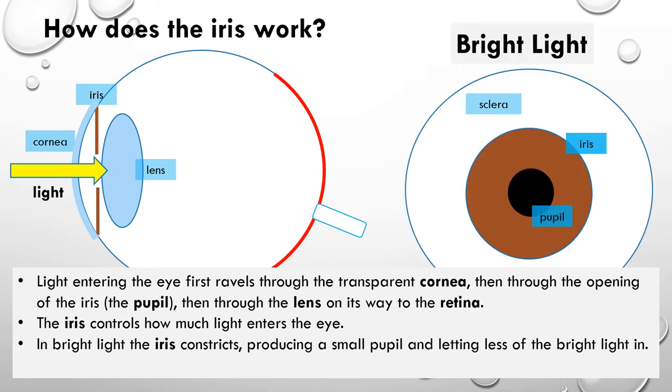So here is a look at the eye from the front. We can see the iris, the pupil, and the sclera. The sclera, the white part of the eye. The iris is the colored part. Remember, it can be brown, it can be blue, it can be green.